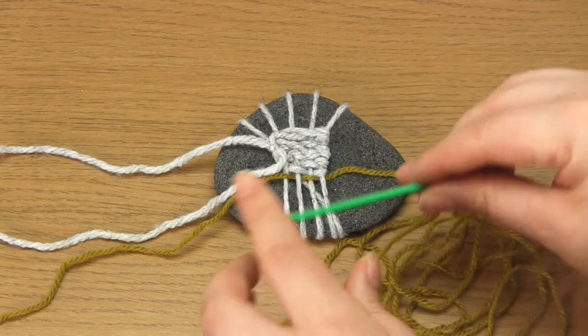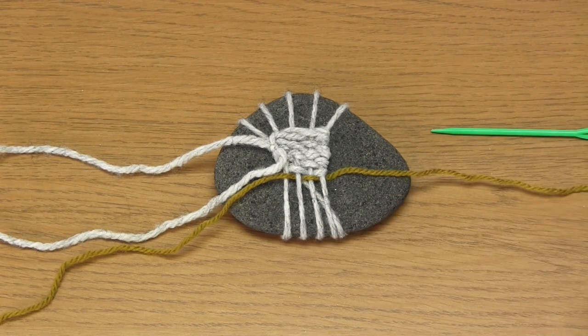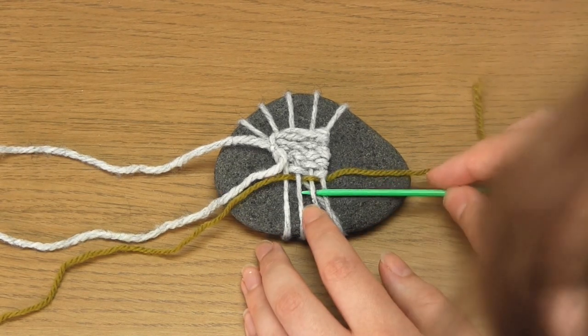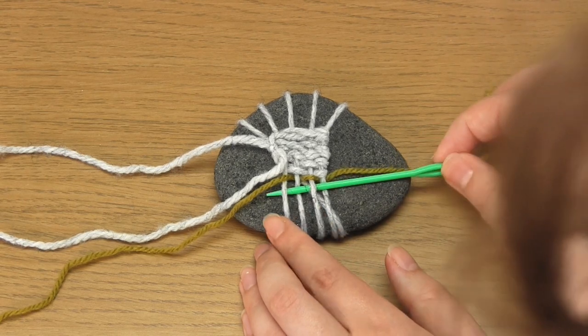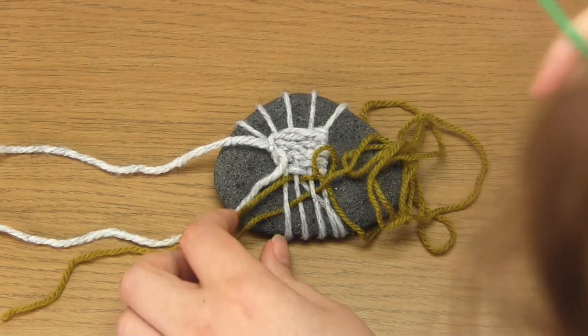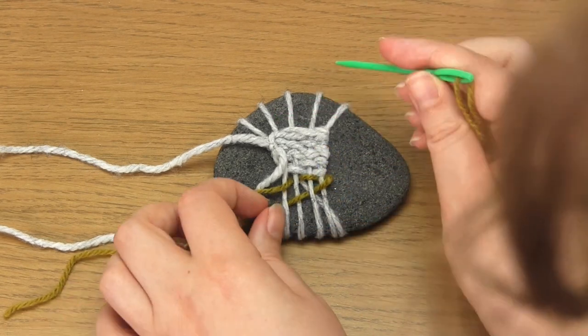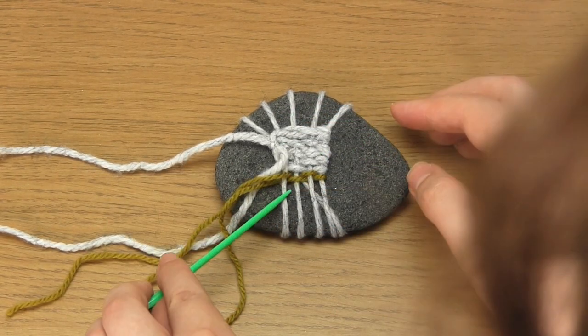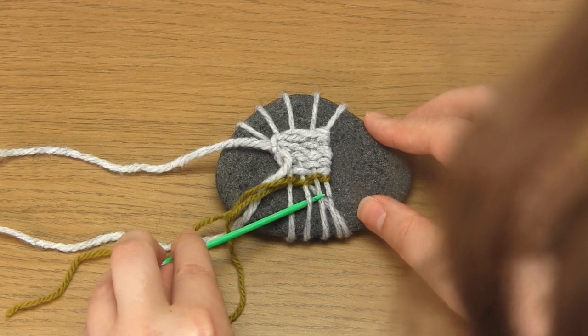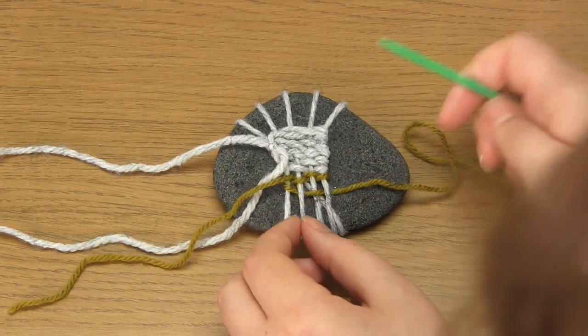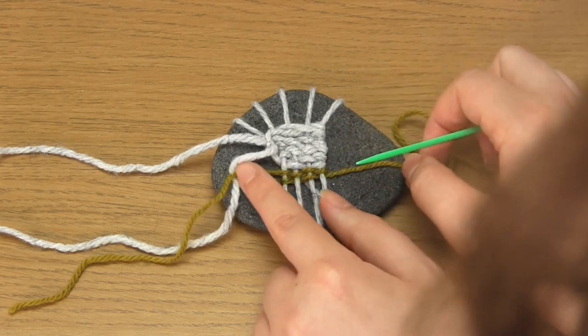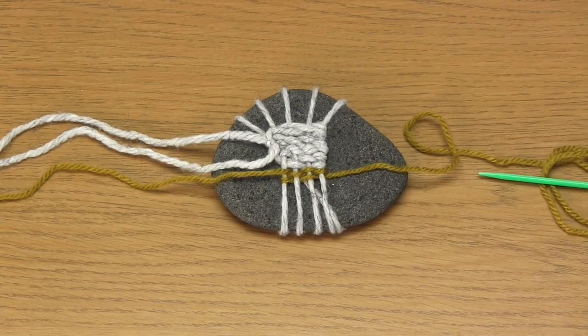Feed this yarn tail into your yarn needle and then weave from right to left. Then from left to right. Use your needle to push these horizontal yarn strands upwards so they're all next to each other and as neat as possible.